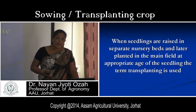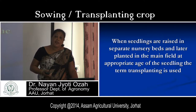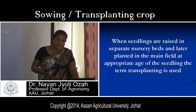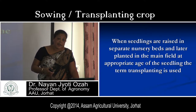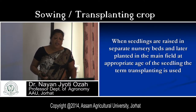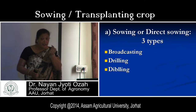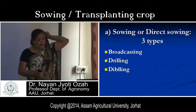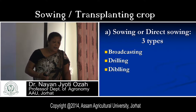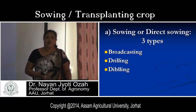In summary: sowing uses botanical seeds; planting uses any other material like tubers, rooted slips, or vegetative parts; and transplanting involves removing seedlings from the nursery bed and planting them in the main field. There are three types of sowing or direct sowing: the first is broadcasting, the second is drilling, and the third is dibbling.